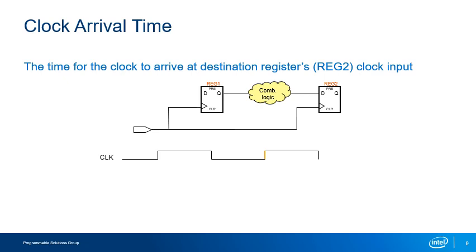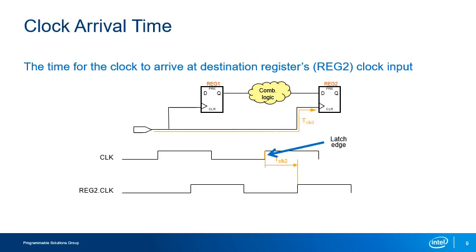The clock arrival time is the time it takes for the latch edge to arrive at the destination register's clock pin. It equals the latch edge adjusted to a zero reference plus the delay from the clock source to the clock input of the destination register. If the source and destination registers are in the same clock domain, the latch edge is one clock period later than the launch edge. If the clocks come from two different domains, the actual difference in time between the launch and latch edges is used.